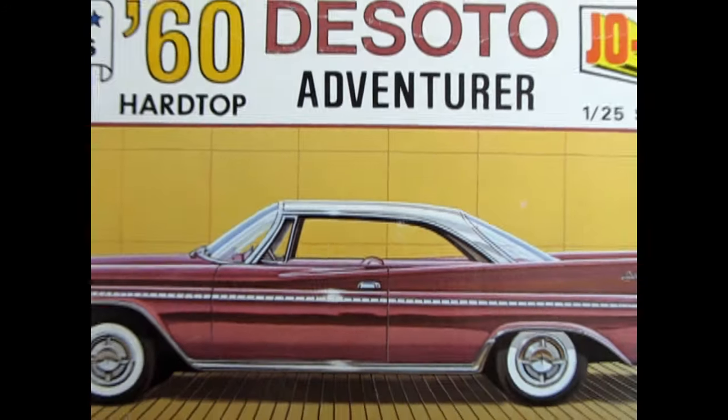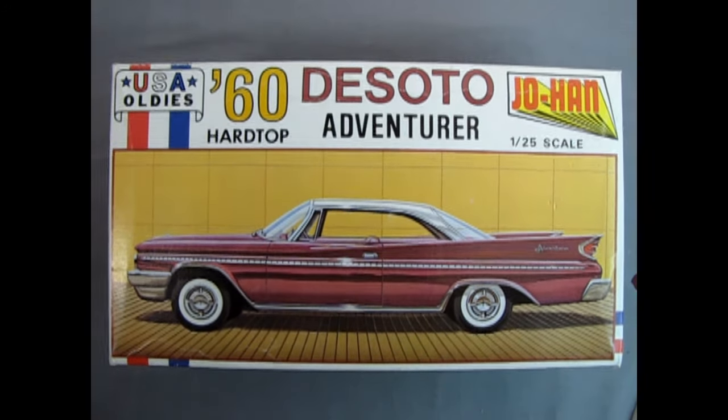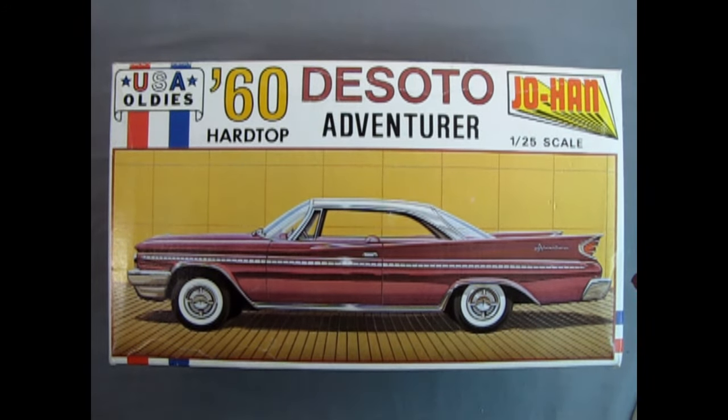Let's wind the clock all the way back to 1960 as we check out this amazing DeSoto Adventurer, pretty much the last year of DeSoto in the real world. Take a look at this wonderful box art. We have this wall in behind with this floor down below, and our car is in a metallic pink rose type of color with a white roof and some nice white walls and hubcaps.